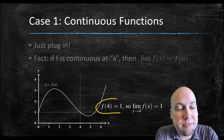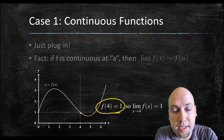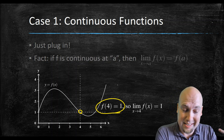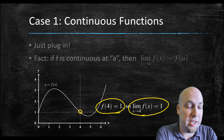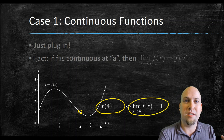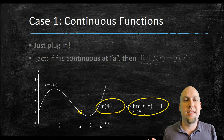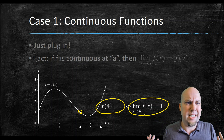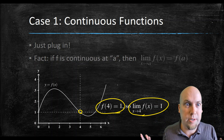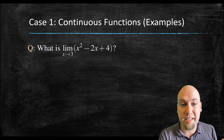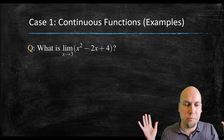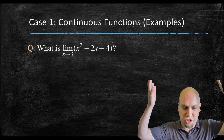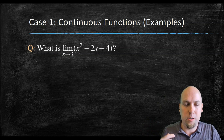For continuous functions, whatever you get when you plug the x value into the function — in this case, if I plug in four, I get one — that's exactly what the limit equals as x approaches four. So in a sense, for continuous functions, limits don't do anything new. A limit as x approaches something is the same as just plugging into the function. You don't have to be clever. Continuous functions are really, really nice — you can just shut your brain off and plug into the function like you normally would.